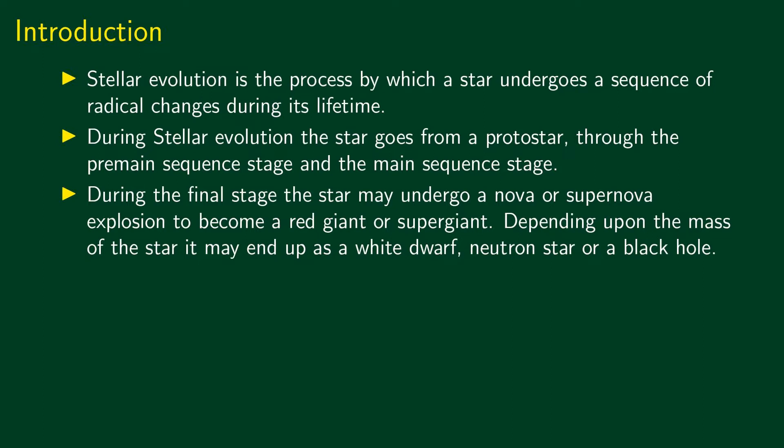Stellar evolution begins with the proto-star, that is the pre-main sequence, followed by the main sequence — which is a diagonal line. Then it becomes a red giant or a super giant, followed by a nova or supernova explosion.